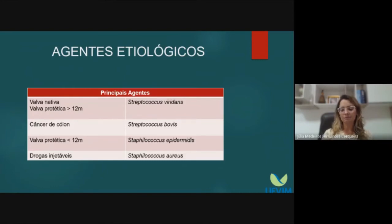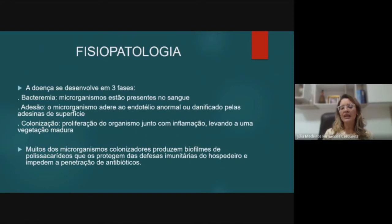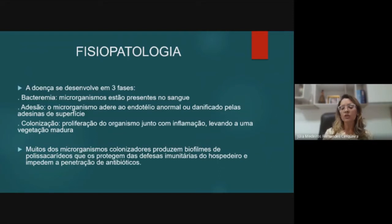The disease develops in three phases: first, microorganisms are present in the blood (bacteremia); then adhesion occurs to abnormal or damaged endothelium via surface adhesins; followed by colonization — proliferation of the organism with inflammation forming a vegetation. Many colonizing microorganisms produce polysaccharide biofilms that protect against host immune defenses and also impede antibiotic penetration, which is why endocarditis treatment is more prolonged and complex.